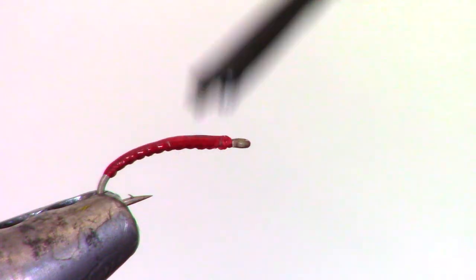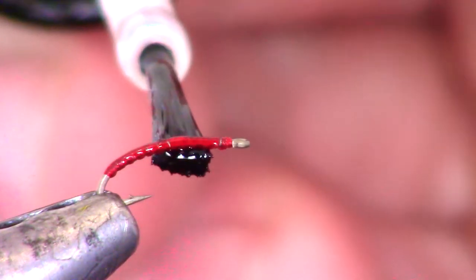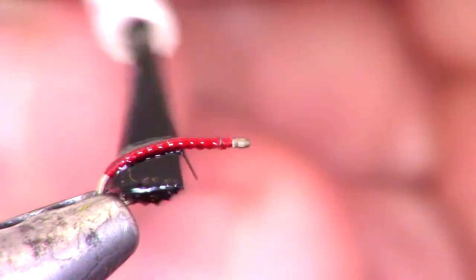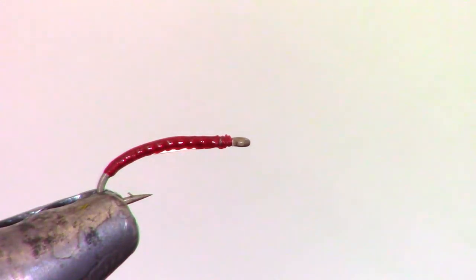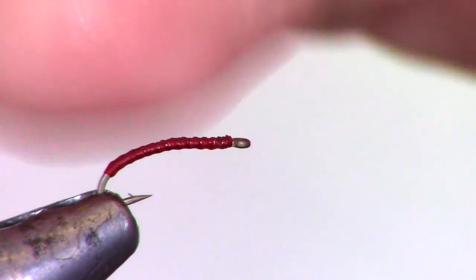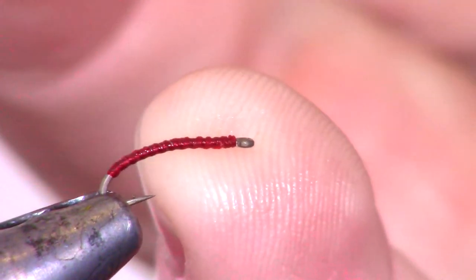The final step is to add a glossy type head cement. I am using hard as hull, which works quite well. Make sure and coat the entire fly, but keep it out of the eye of the hook. Let the head cement sit on the fly for a few seconds, then wipe off the excess with your fingers. And there we have it!